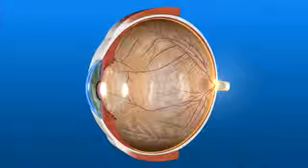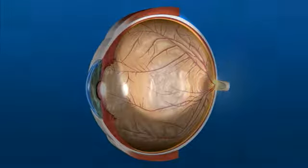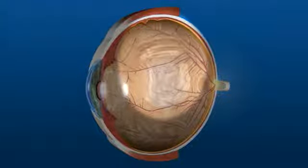With flashes, the vitreous gel is rubbing or pulling at the retina, moving it slightly from its normal position lining the back of the eye. Flashes are flashes of light that appear in your vision intermittently and may be noticeable off and on for several weeks to months.